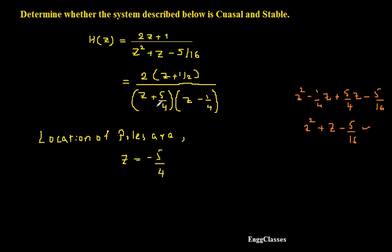If I put Z = -5/4, that term in the denominator equals zero, making H(Z) go to infinity — that's how we identify a pole. Similarly, for the second pole, I need to put a value of Z such that the other denominator factor becomes zero. That value is Z = 1/4. So these two are the poles of the system.